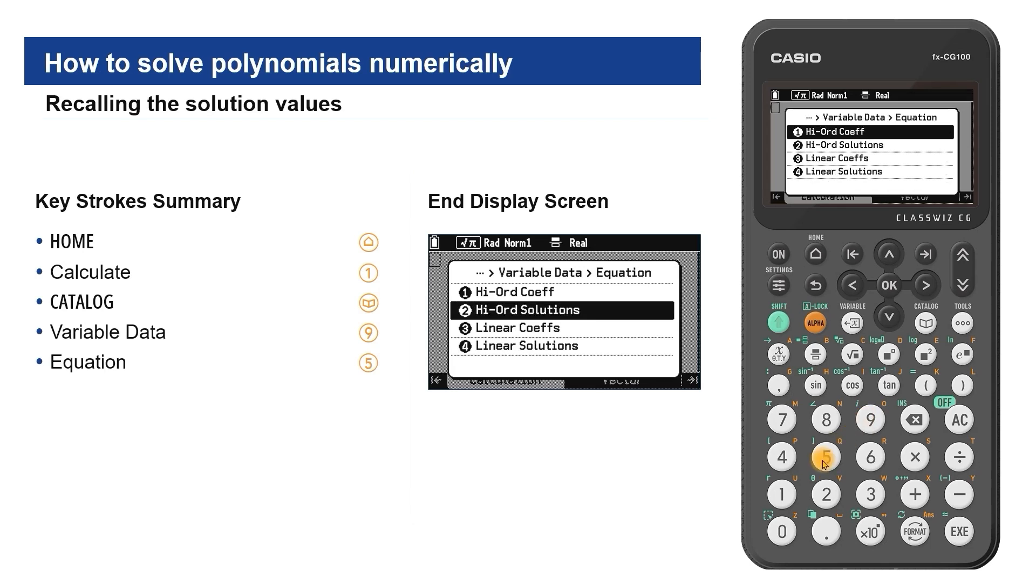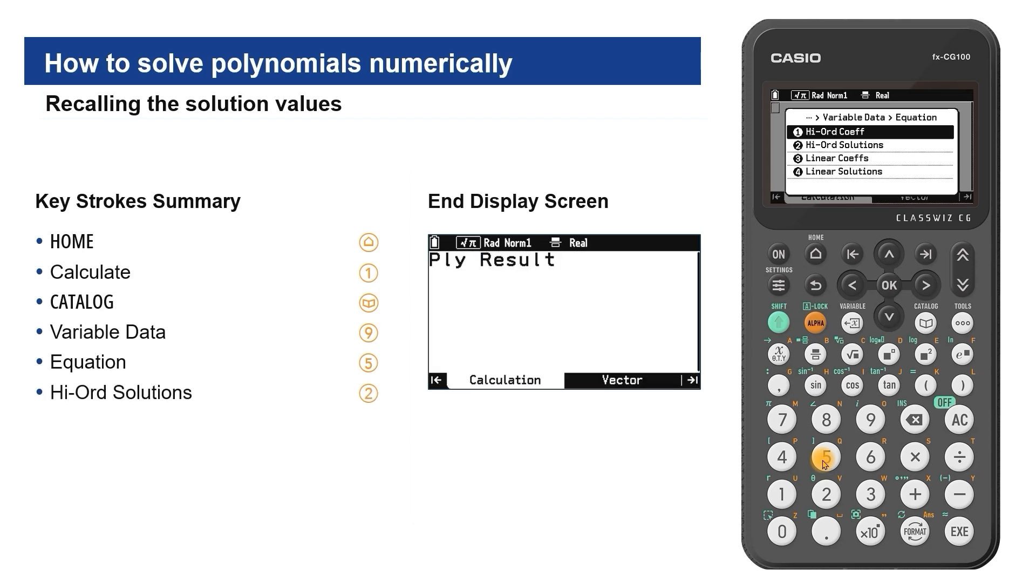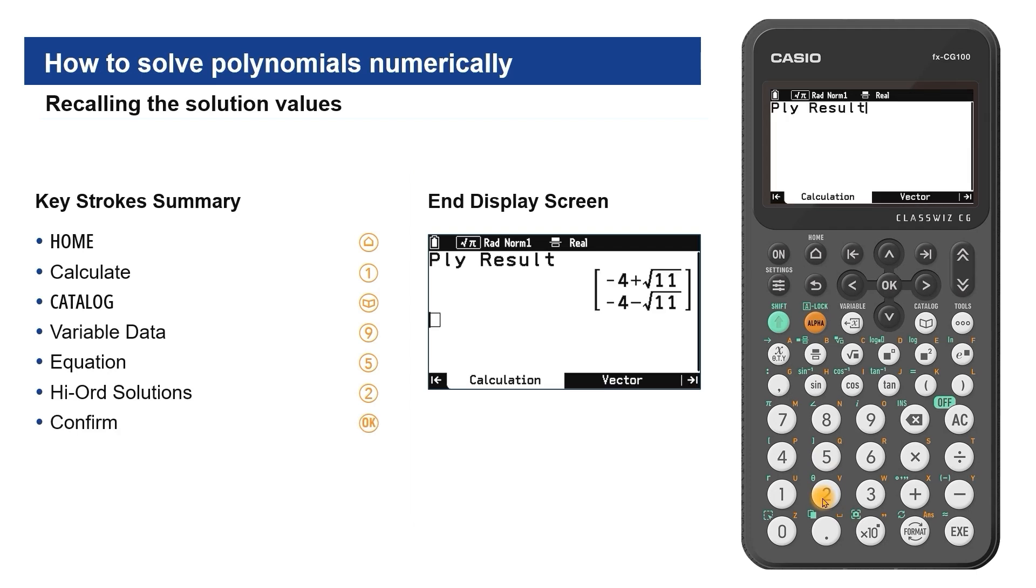This screen allows you to recall the polynomial coefficients as well as the solutions. Select high-ord solutions to display PLY result. And confirm to show a 2x1 matrix of the exact solution values.